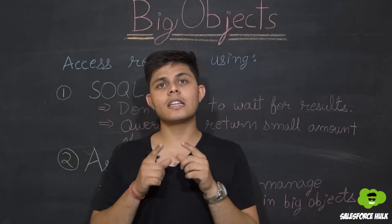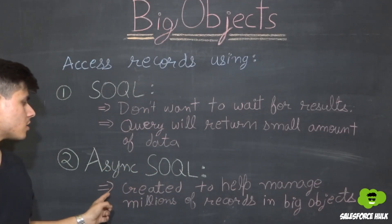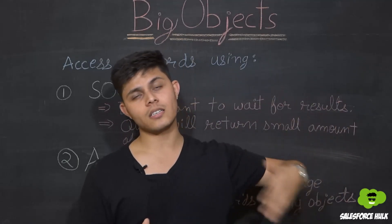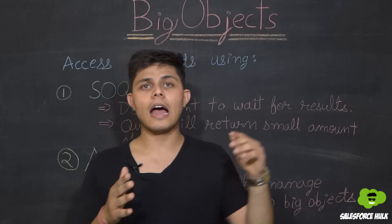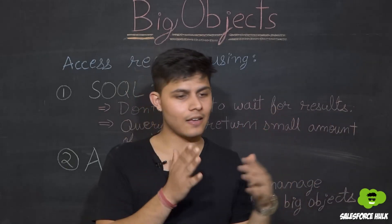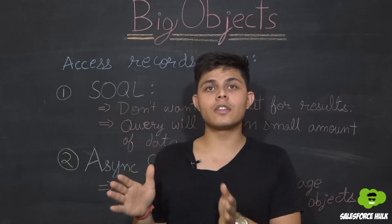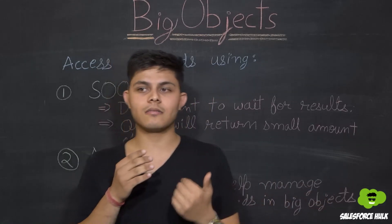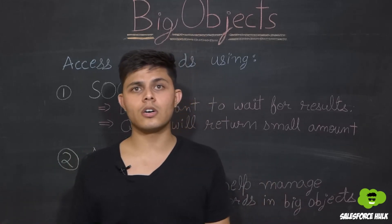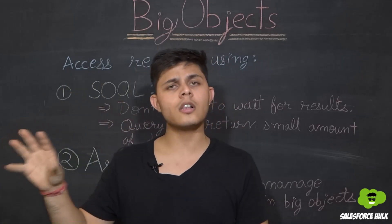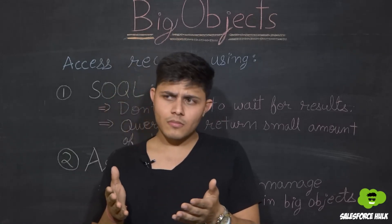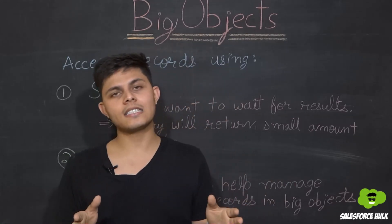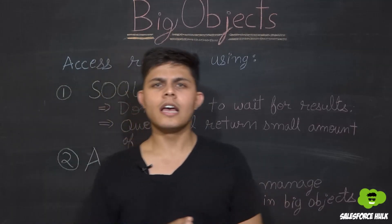If you have millions of records to fetch, you'll need to use Async SOQL, which is designed to help manage billions of records in big objects. With Async SOQL, multiple SOQL queries run in the background fetching data from the big objects, and when they complete, you get a complete dataset that can contain millions of records. If you have a large dataset and can wait for the result, use Async SOQL.